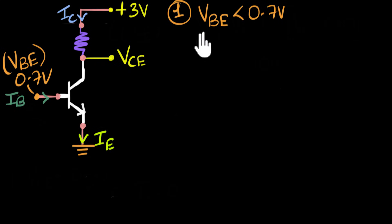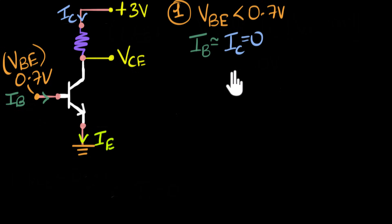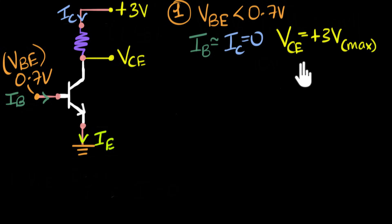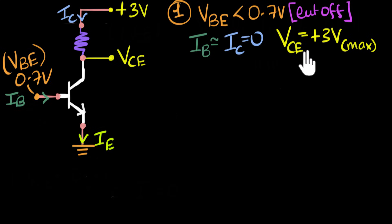So the base current is approximately zero, and even the collector current is approximately zero. Because the collector current is zero, there is no voltage drop across the resistor — no current means no voltage drop, no potential difference. Therefore this voltage is going to be exactly the same as the supply voltage, and therefore VCE is going to be 3V — the maximum voltage ever possible. This is the behavior in which our transistor is not conducting any current at all. This state of a transistor is called the cutoff state. In cutoff, our output current is zero, but our output voltage is maximum.